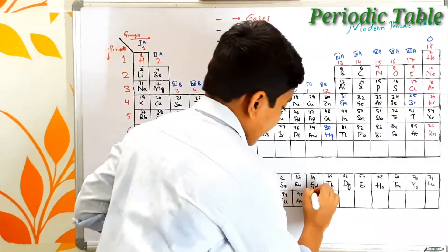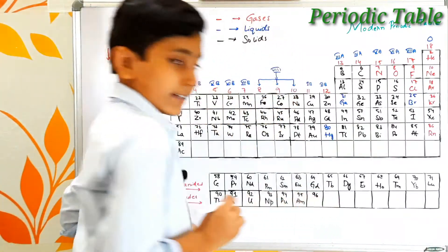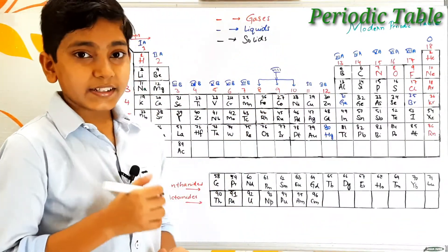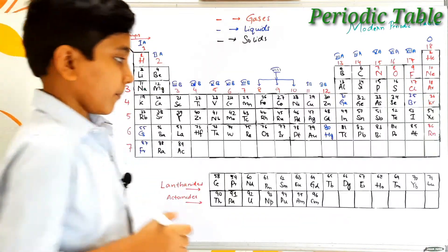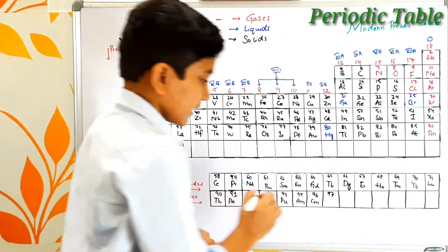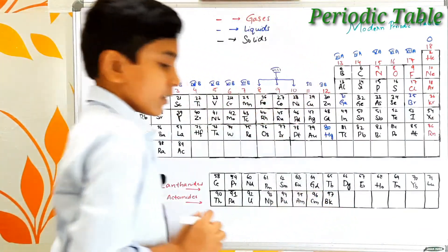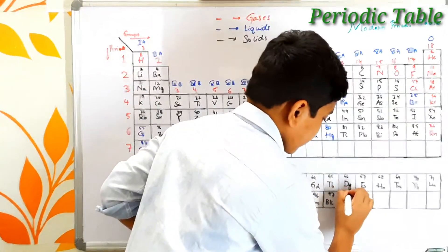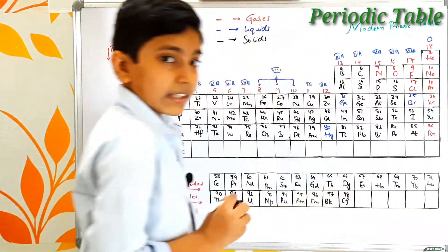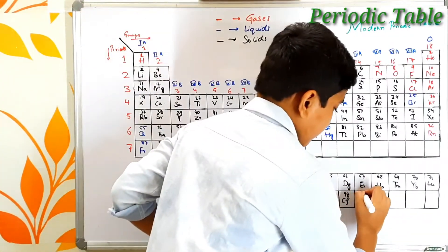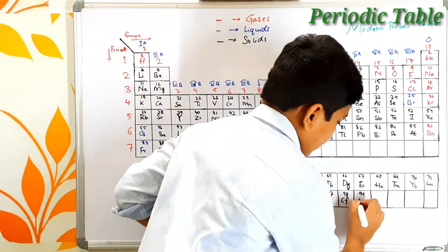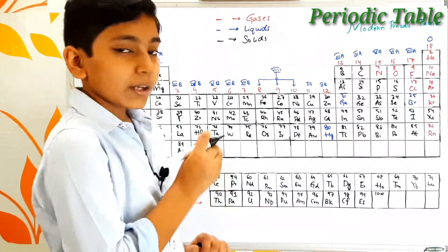Atomic number 96 is curium — its symbol is Cm, and it is named after the famous scientist Marie Curie. Atomic number 97 is berkelium — its symbol is Bk. Atomic number 98 is californium — its symbol is Cf. Atomic number 99 is einsteinium — named after the famous scientist Einstein — its symbol is Es.